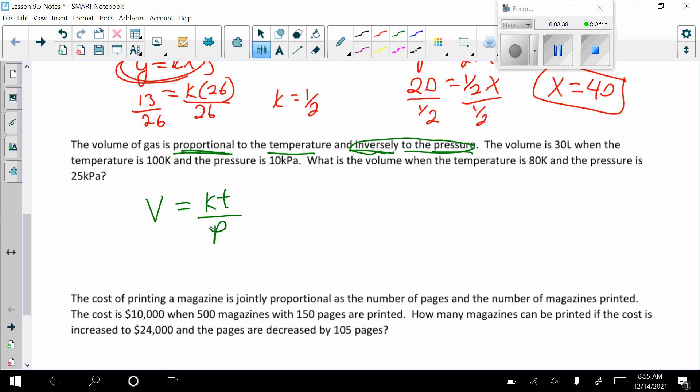Now let's look at the problem and see what it tells us. So the volume is 30 liters when the temperature is 100 Kelvin and pressure is 10. So let's see that pressure is going to go on the bottom. So the first thing I'm going to do is clean this up. So 30 equals 10K. And then we're going to solve for K. So K equals 3.